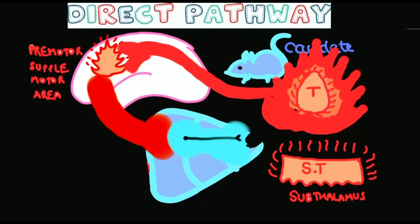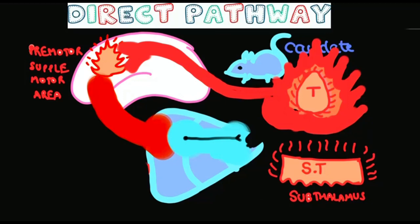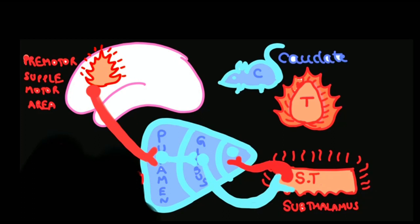Now let's see the indirect pathway. Fibers come from the cortex to the putamen, from the putamen to the globus pallidus externa, from the globus pallidus externa to the subthalamus, from the subthalamus to the globus pallidus interna, from globus pallidus interna to the thalamus, and from thalamus to the cortex again. This is the indirect pathway.